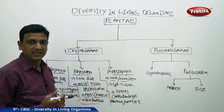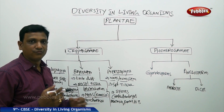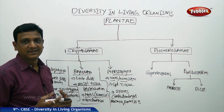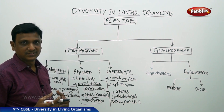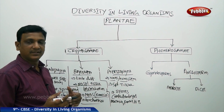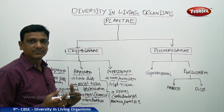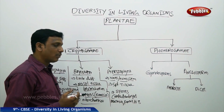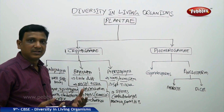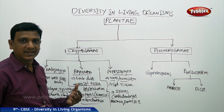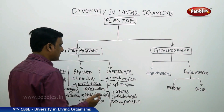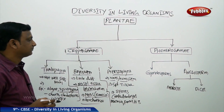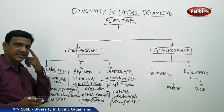Ferns are seen in bushes and rocky areas as small plants. They do not bear any flowers. They bear spores on the underside of their leaves and reproduce by the help of these spores. The embryos are seen outside, which is the characteristic called naked embryos — that is what defines Cryptogamae.